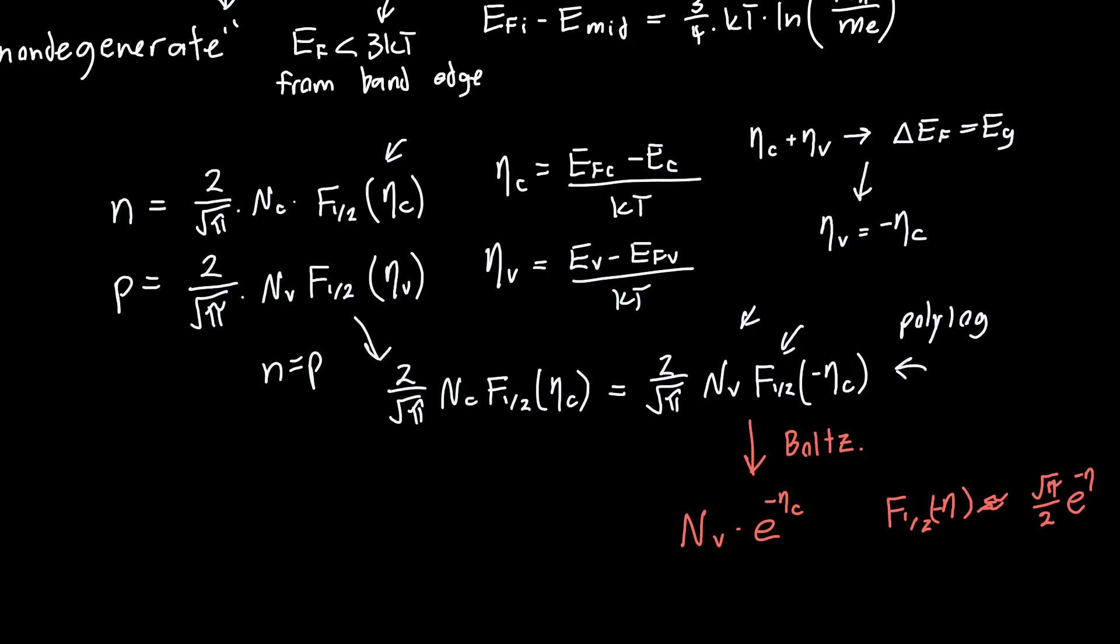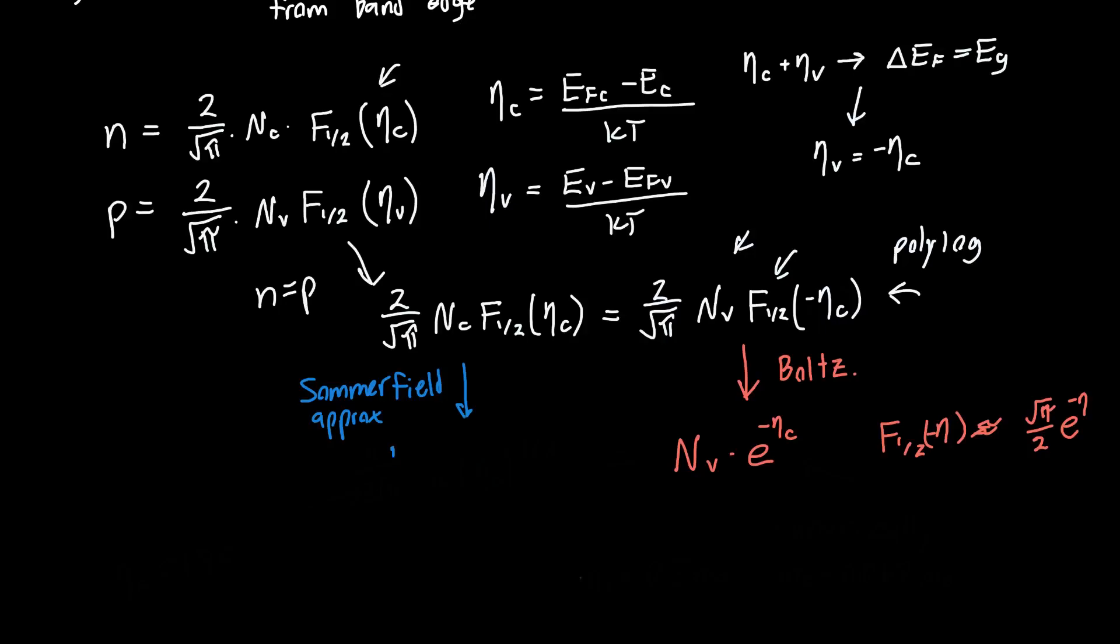On the left hand side, we can also make what's called the Sommerfield approximation. Then this left hand side turns into 4 over 3 root pi times nc times eta c to the three halves. And these two sides have to be equal to each other.